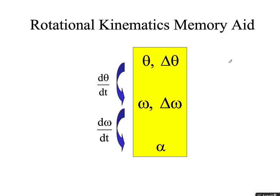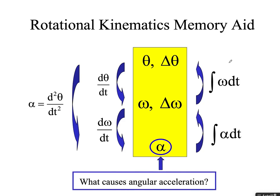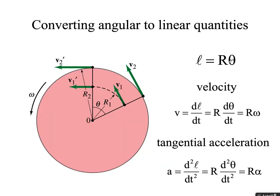The derivative with respect to time of theta gives you omega; from omega gives you alpha, or the second derivative of theta with respect to time gives you alpha. In reverse, the integral of alpha dt gives you d omega, and the integral of omega dt gives you the change in theta. What causes an angular acceleration? The answer is a net torque. Forces cause acceleration; torques cause angular acceleration.